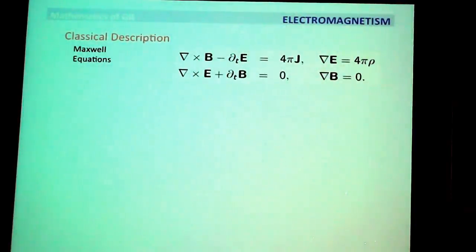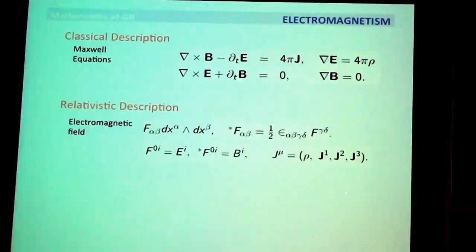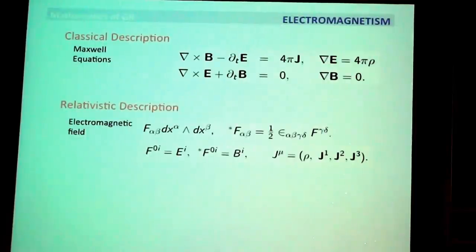You can see immediately how the relativistic formulation achieves a lot of simplification. In the relativistic setting, the electromagnetic field is now a two-form F — an antisymmetric two-tensor. I can define the dual, the Hodge dual, using the volume form in four dimensions. The zero-i component of F are the electric field components Eᵢ, and the dual components of the zero-i are the magnetic field components Bᵢ.